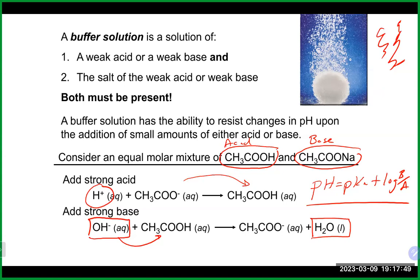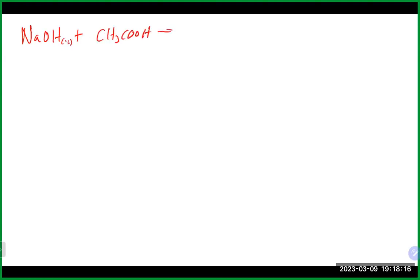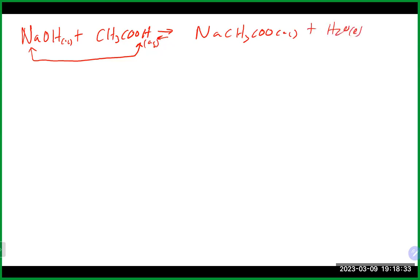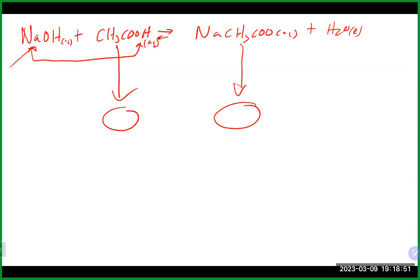Although you cannot have a buffer made strictly of a strong acid or strong base, you can actually make a buffer from a reaction of a strong acid or strong base with the appropriate weak partner. For example, if you took sodium hydroxide and reacted it with acetic acid, a double displacement reaction occurs — they switch partners, forming sodium acetate and water. The sodium hydroxide itself is not the buffer.